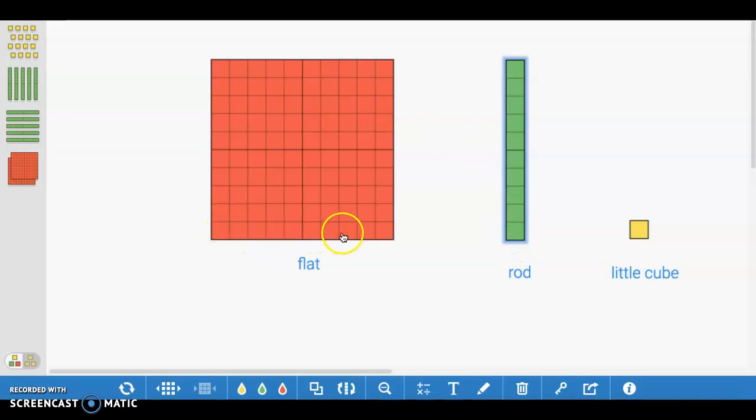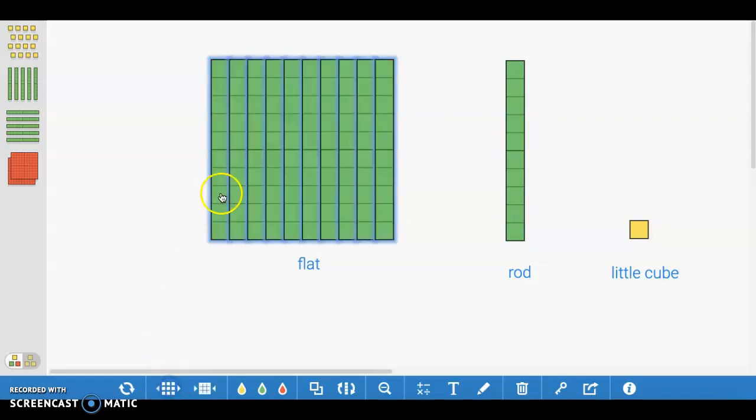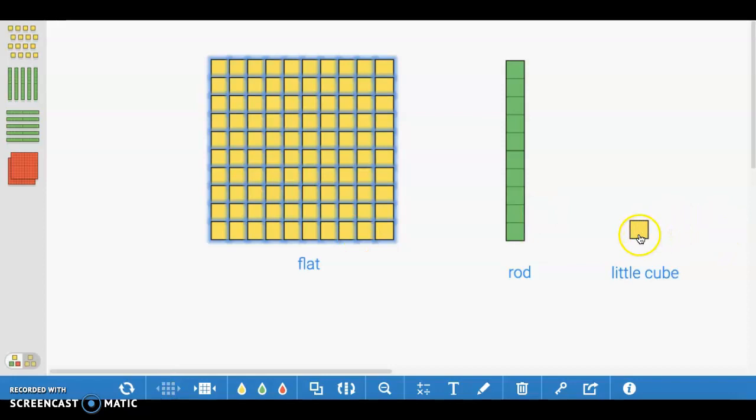Then we have a flat, and a flat is equal to 10 rods, and we can see that by breaking apart this flat into 10 rods. We can also break it down even further into 100 little cubes.